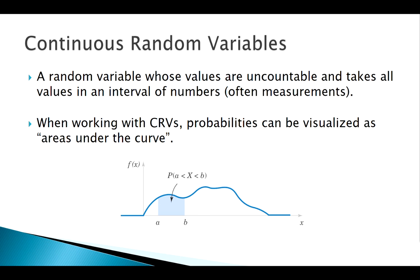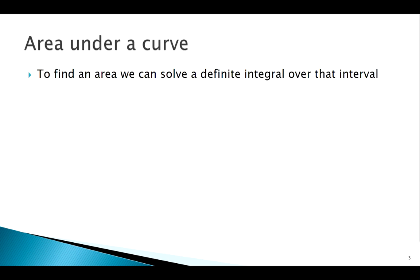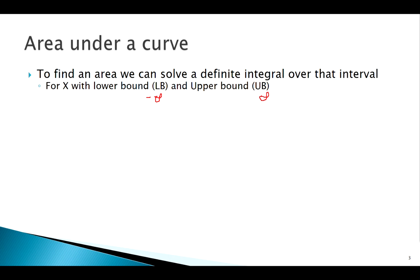How do we find areas under a curve? We have a mathematical tool for that — an integral. We can use definite integrals. Now, depending on the resource you look at, sometimes the bounds are defined from negative infinity to infinity, but not every random variable is defined that way. Every continuous random variable is bounded — it will have some lower bound or upper bound. The idea is: to find a probability, say the probability of X being between two numbers a and b, you take the definite integral from a to b of its PDF.